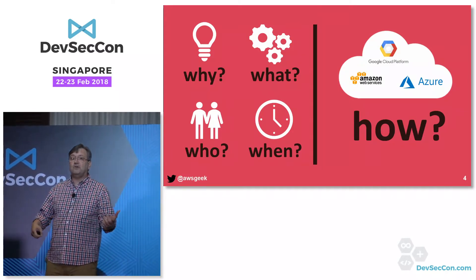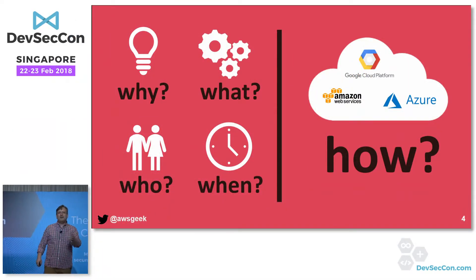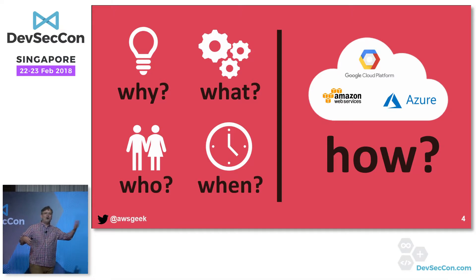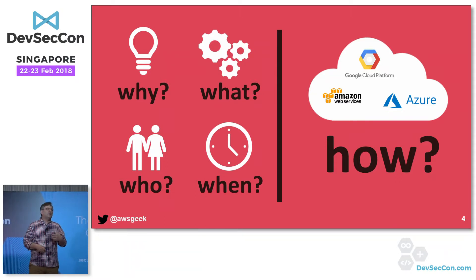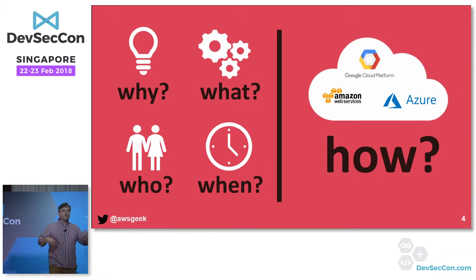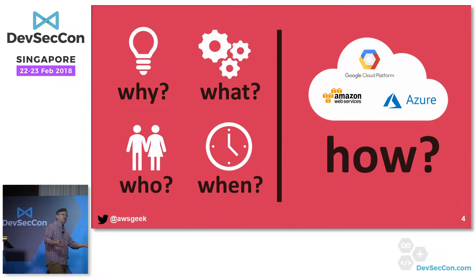My background is as a developer, so I was happy to see about 50% of the people here raised their hand when asked who's a developer. I also noticed that when the break came, about half the people left their laptops sitting on their desk and walked away, and the other half packed them up and secured them. I'm assuming it was us developers who just left our stuff sitting out. I'm going to go a little deeper than some previous talks — less about the why, what, who, and when, and more about how. A very practical, pragmatic approach to DevSecOps, in particular for those working in the cloud, based on my experience with AWS, Azure, and GCP customers.